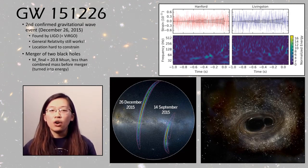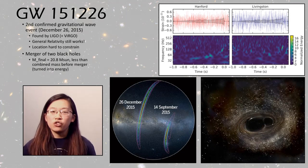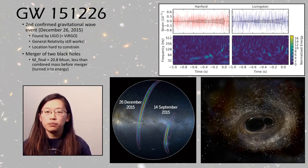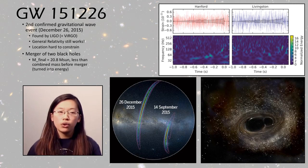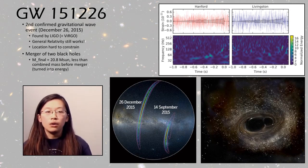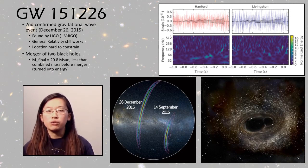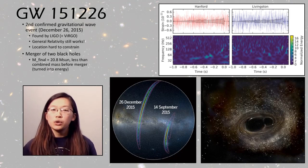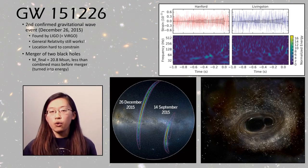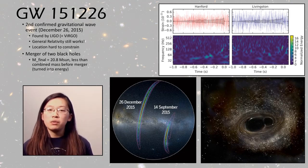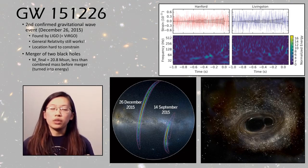However, this was kind of a hard event to follow up, because as you can see in the bottom left there, its location on the sky was kind of hard to constrain. So this is thought to have come from a merger of two black holes, with a total final mass of 20.8 solar masses. So this is actually less than the calculated mass of the two black holes before the merger, because some of that mass was turned into energy that we then saw.